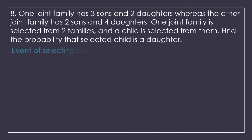I will denote the event of selecting a family as F1 and F2, because we have to select a joint family first out of both families. There are 2 joint families and 1 is to be selected, so the probability of selection of both families will be the same — that is 1 upon 2. Out of 2 families, if I am selecting 1, the probability of selection will be 1 upon 2.